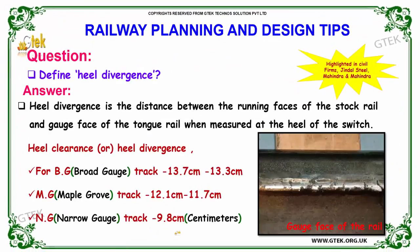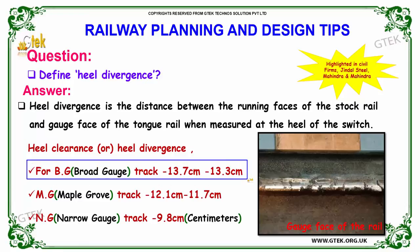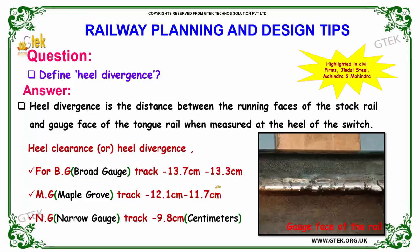The next question: define heel divergence. Heel divergence is the distance between the running faces of the stock rail and gauge face of the tongue rail when measured at the heel of the switch. For broad gauge (BG) it is 13.7 cm to 13.3 cm; for meter gauge (MG) it is 12.1 cm to 11.7 cm; and for narrow gauge (NG) it is 9.8 cm.